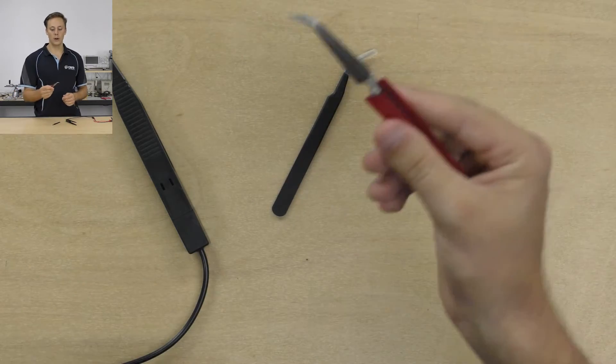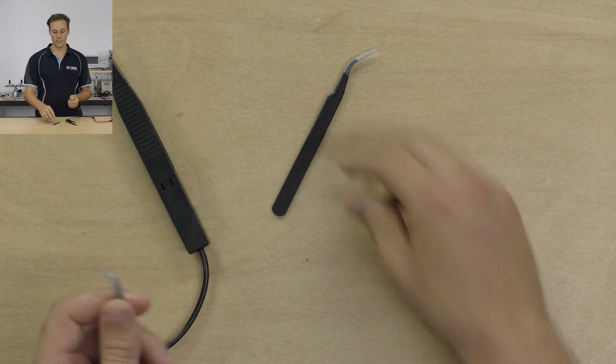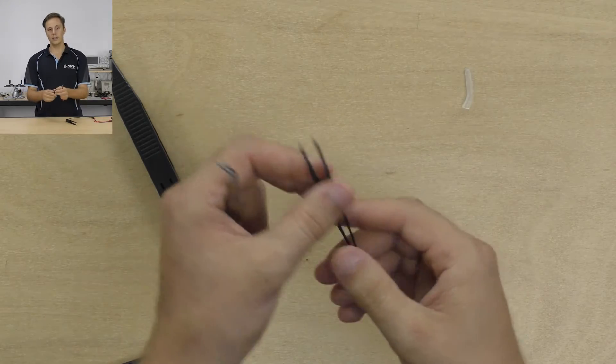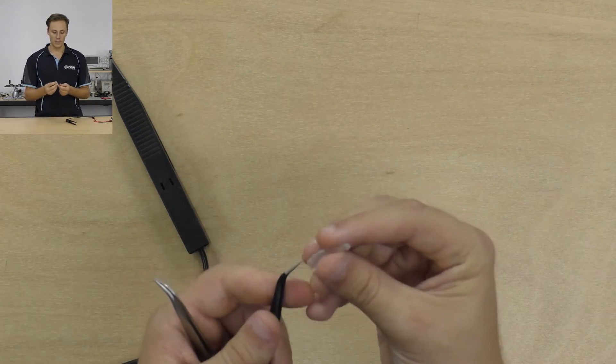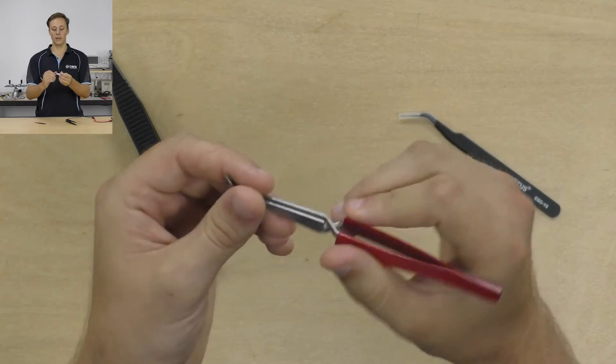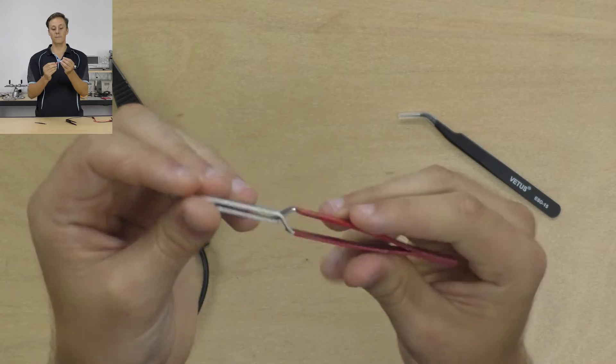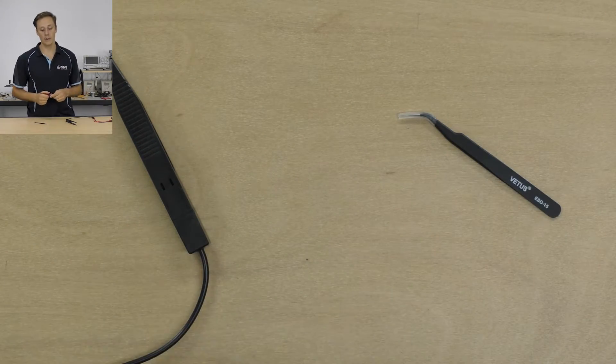Now next up, we've got this variety from SparkFun, and these are called cross-locking, or cross-locked tweezers, because as you notice with these ones, normally they're held open by the tension in the metal, and you squeeze to close them. But with this ones, the needle handles go across each other, which means that they're being forced closed by the tension in the metal when you're not squeezing them, which is really good if you want to grab hold of things.